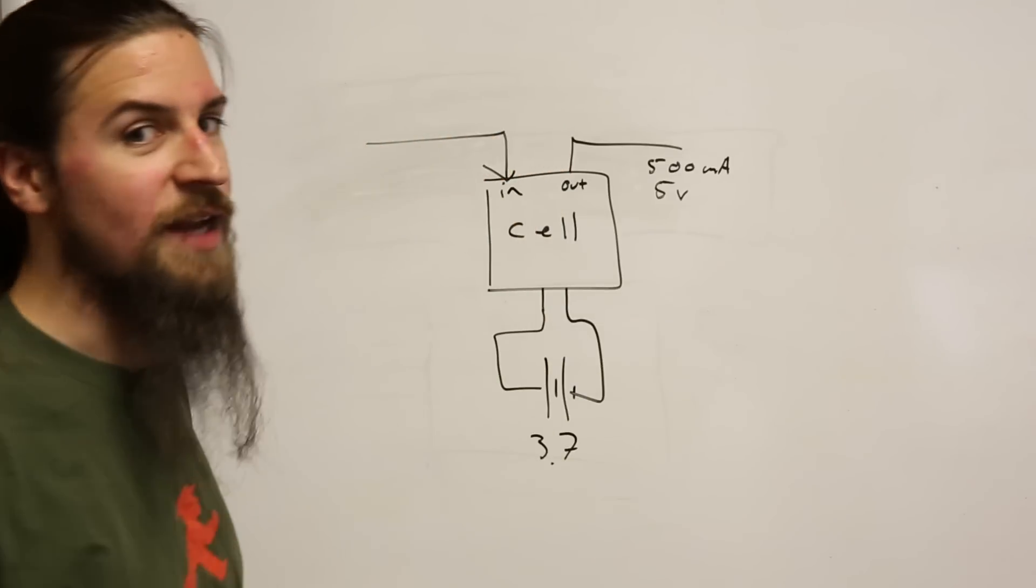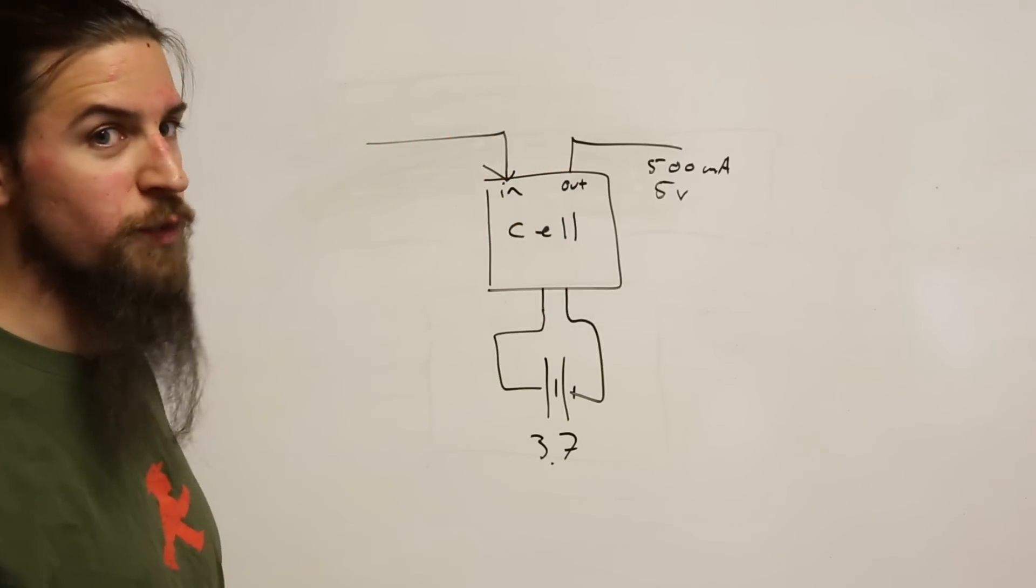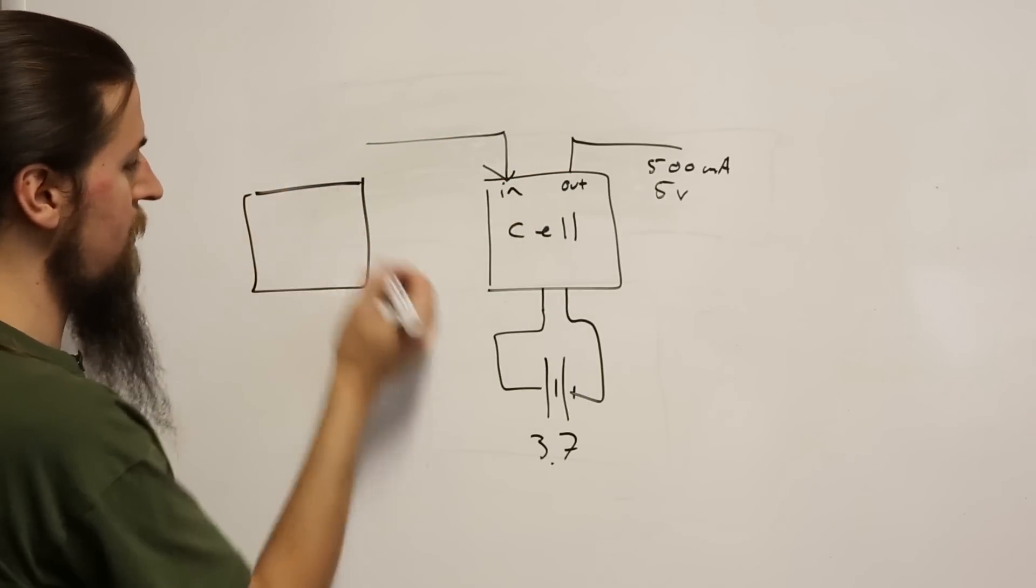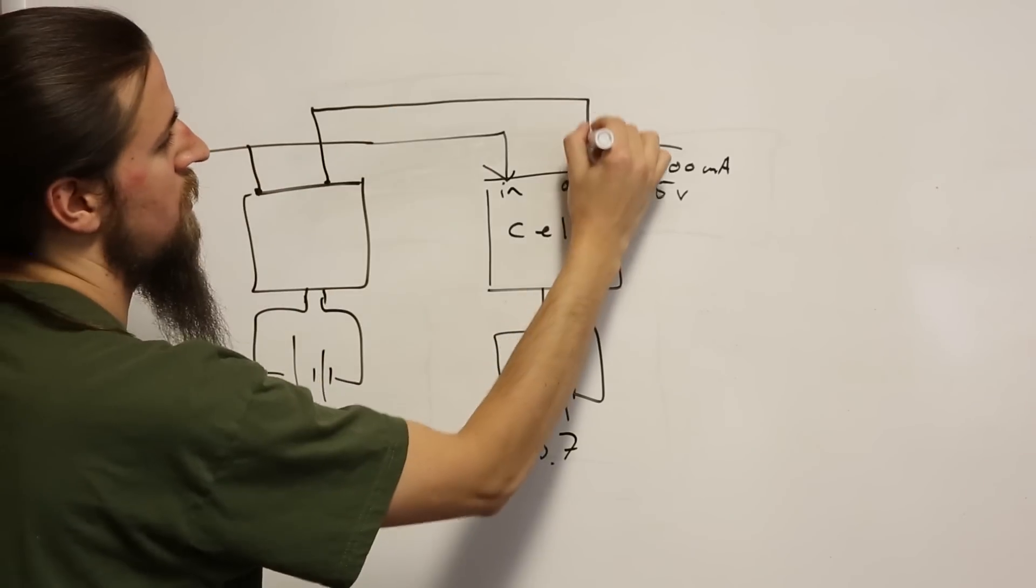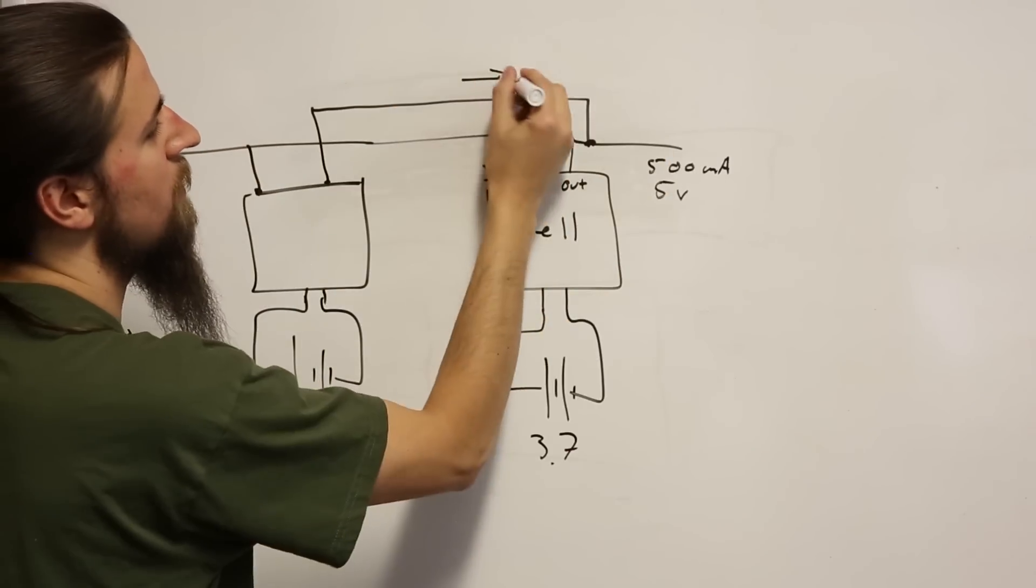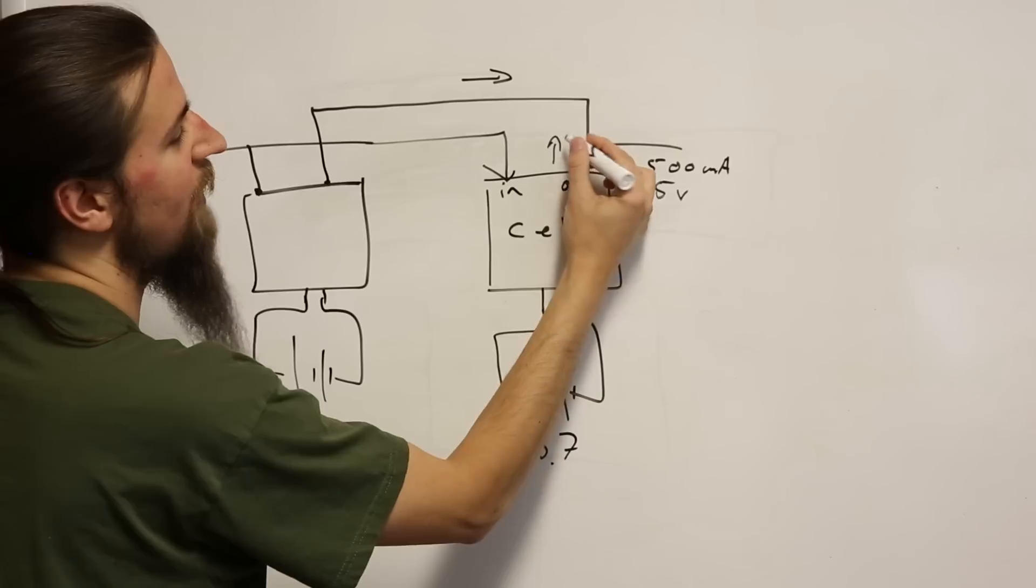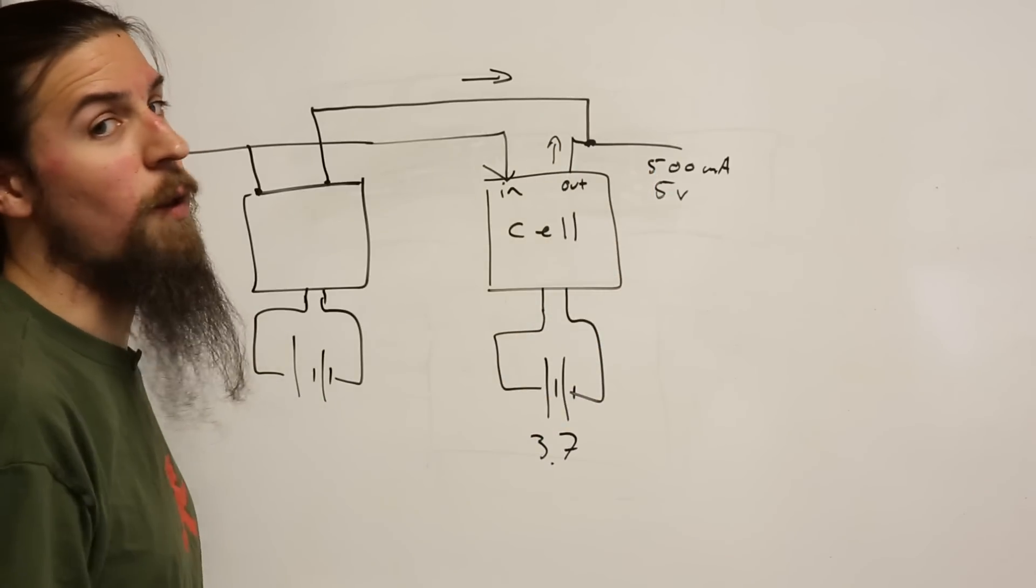Now that we know we need 900 milliamps, let's try combining two of these in parallel. We'll have another one over here, join our inputs, and join our outputs. Now each one can supply 500 milliamps and we should be able to get one amp out.